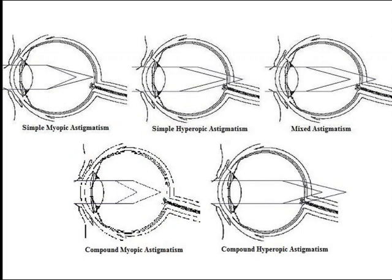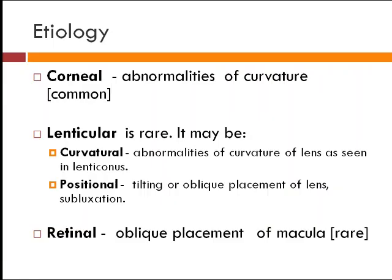Irregular astigmatism involves irregular changes in refractive power across different meridians. The types of regular astigmatism include: simple, compound, and mixed. In astigmatism there are two focal points. If one focal point falls on the retina (emmetropic) and the other is in front of the retina, that is simple myopic astigmatism; if the other is behind the retina, it is simple hyperopic astigmatism. If one focal point is in front of the retina and the other is behind, that is mixed astigmatism. If both focal points are in front — compound myopic astigmatism; both behind — compound hyperopic astigmatism.